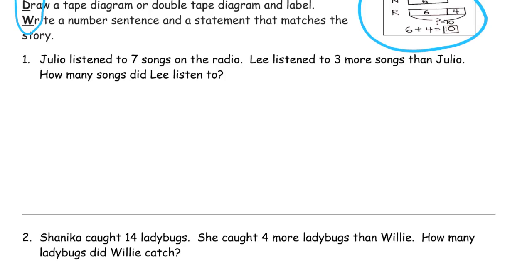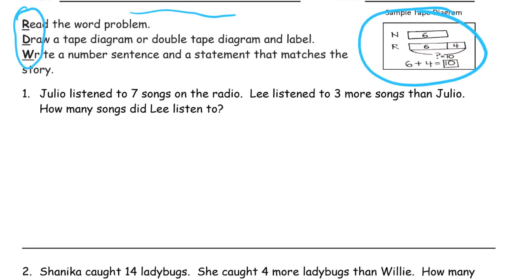Julio listened to seven songs on the radio. Lee listened to three more songs than Julio. How many songs did Lee listen to? So part of my reading process is: we have a story and a question. The story is only two sentences long, and we have two characters, Julio and Lee — they listened to some songs on the radio.